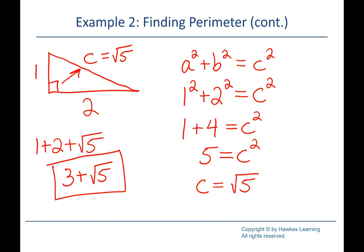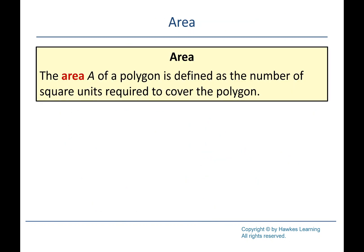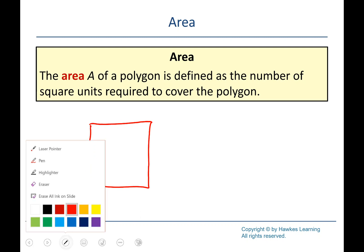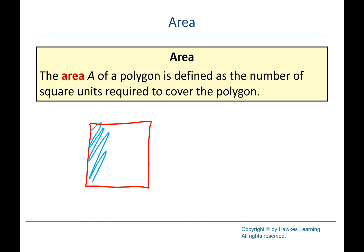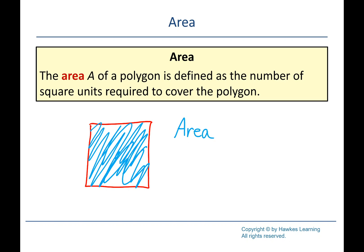Our other big topic is area. Area is the space enclosed by a polygon — it's a two-dimensional measurement in square units. You can think of it as the blue space inside the shape, whereas the red border is the perimeter. Area is like painting or covering the inside portion of a shape.